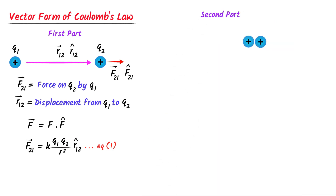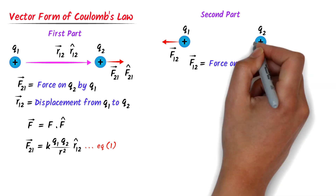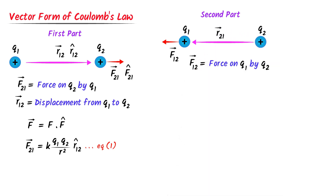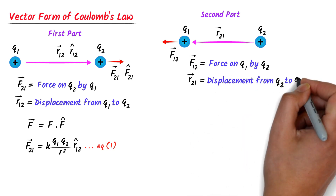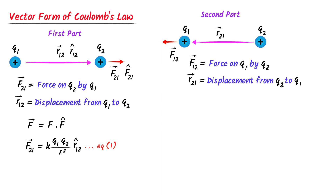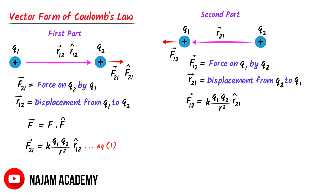In the second part, Q2 exerts force on Q1. Q1 experiences the force of Q2 — we call it F12, the force on Q1 due to Q2. The Q1 charge is displaced away from Q2. We say R21 is the displacement from Q2 towards Q1. The vector form: F12 = k × Q1 × Q2 / R² × R̂₂₁. This is equation number 2.